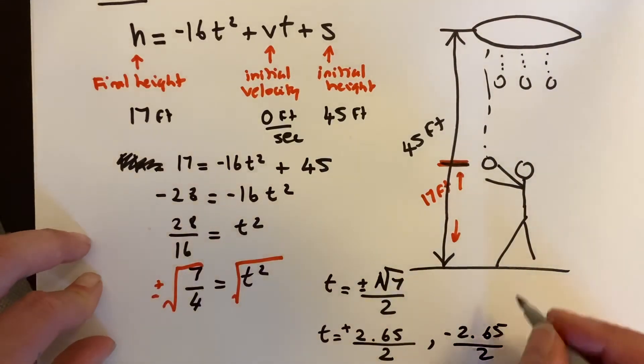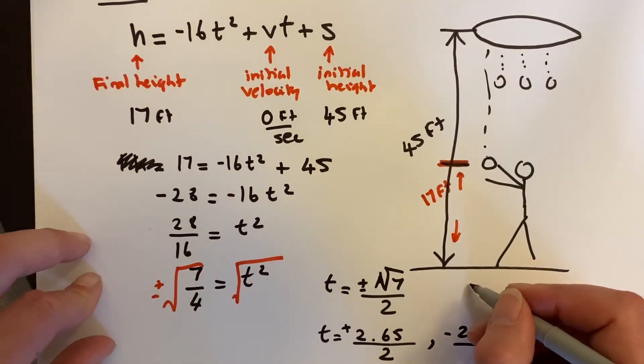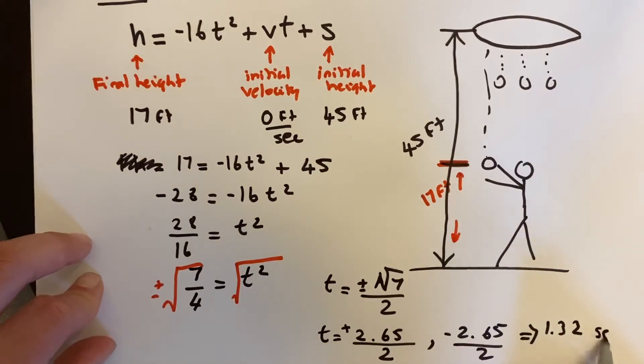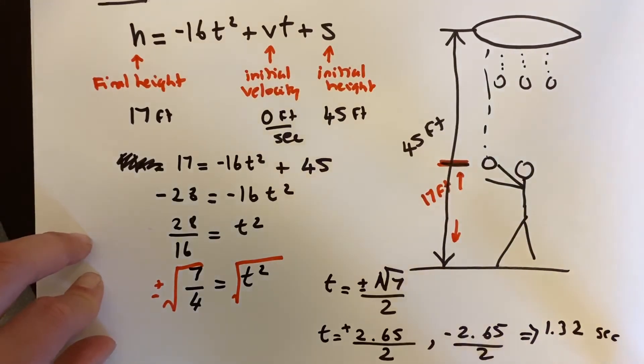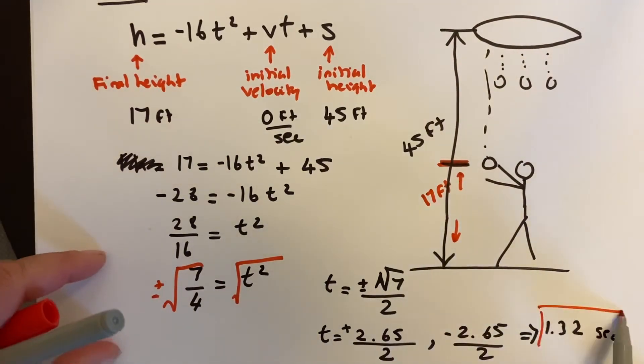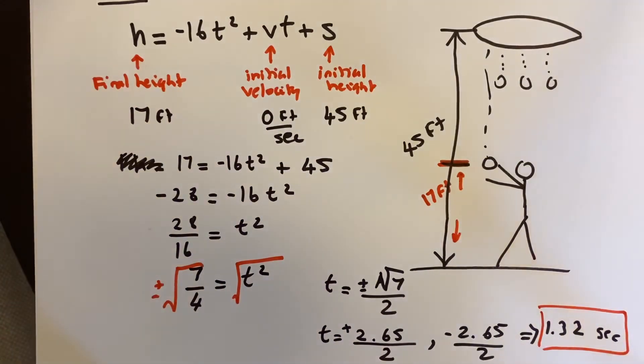Once I do that out, I end up with positive 1.32 seconds and negative 1.32 seconds. But we know that we're not going to have negative seconds, so we know that only the positive number is actually going to count.